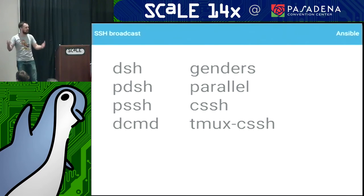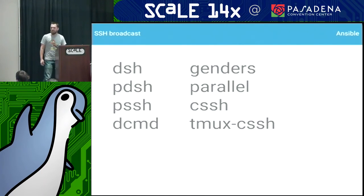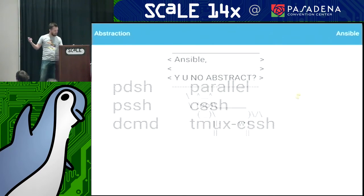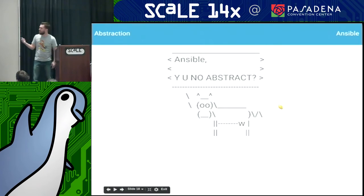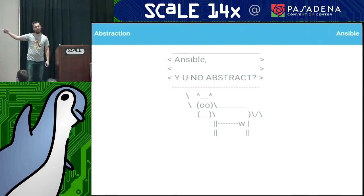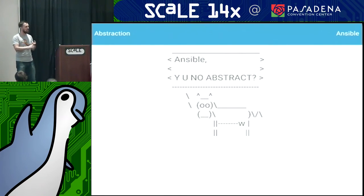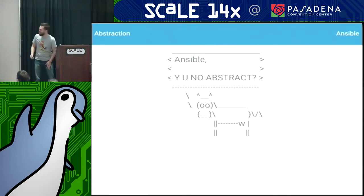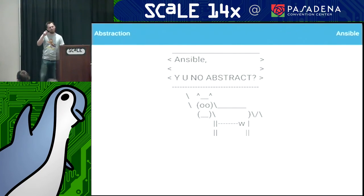Every other week there's another parallel SSH tool. But Ansible gives us a couple of different things: abstraction, and cowsay. None of those other tools gave me cowsay. There are two things everyone does when they run Ansible for the first time: one is they turn on infinite scroll-back in their shell because cowsay is taking up forty lines, and the second is they uninstall cowsay — it was cute but not practical.